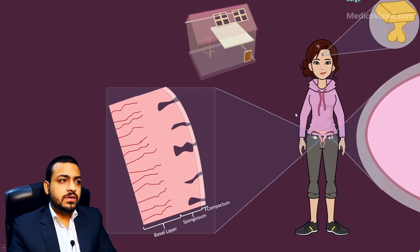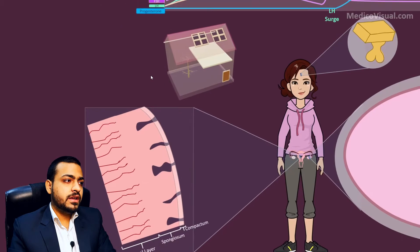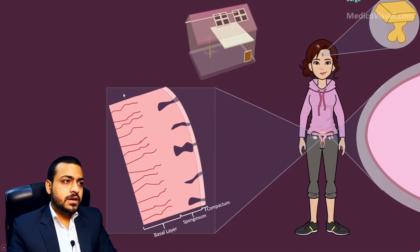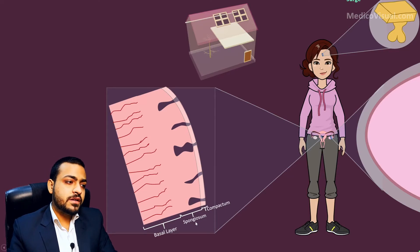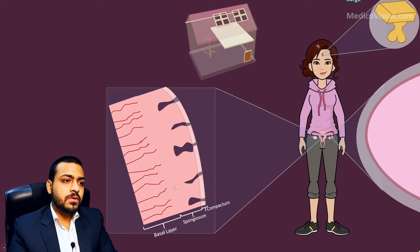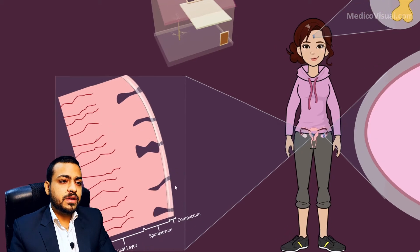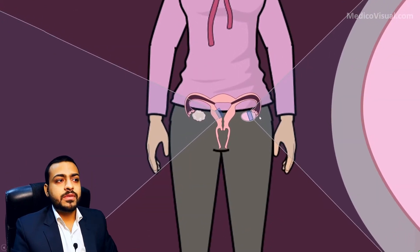In the pre-ovulatory part of the cycle, we discussed how proliferative changes occurred in the endometrium, which acquired two extra layers: the stratum spongiosum and compactum. It was like an empty home for the baby. Now there could be two possibilities.